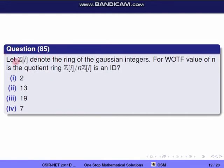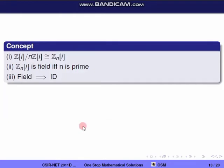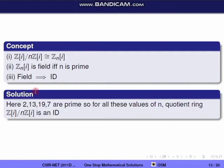Next question, Question 85: Let Z[i] denote the ring of Gaussian integers. For which values of n is the quotient ring Z[i]/nZ[i] an integral domain? The concept used: Z[i]/nZ[i] is isomorphic to a field if and only if n is prime, and every field is an integral domain. All the given options are prime numbers, so for all those values the quotient ring Z[i]/nZ[i] is a field, hence an integral domain. The correct options are 1, 2, 3, and 4.